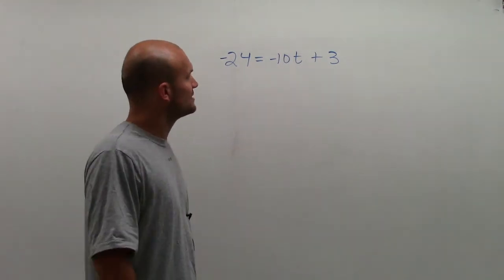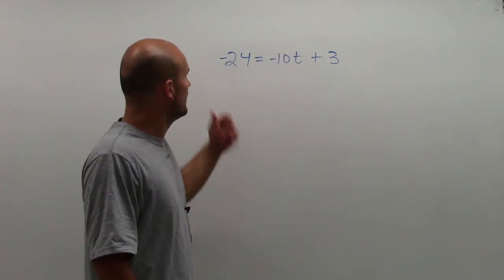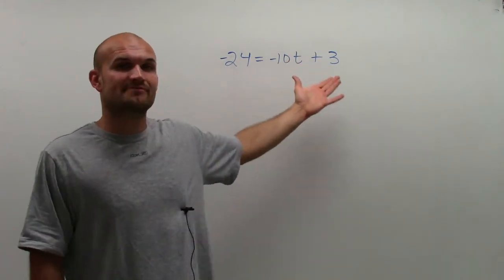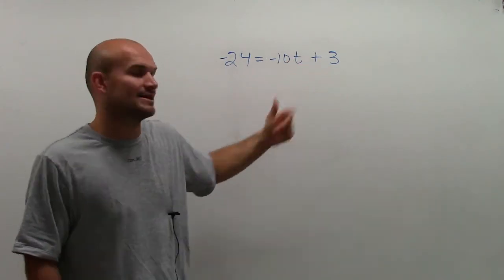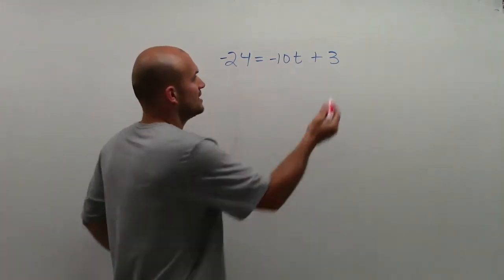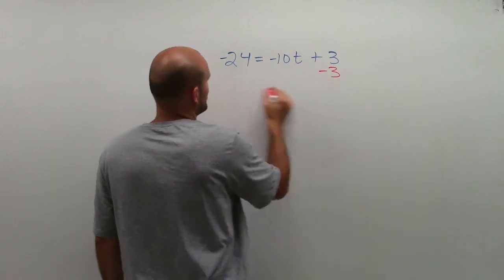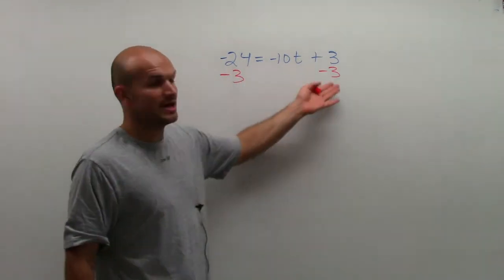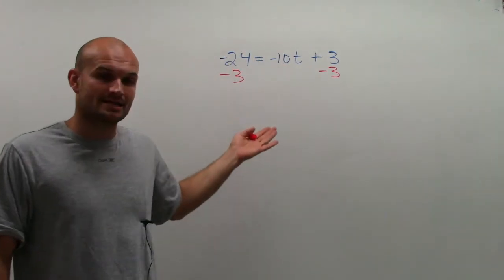So here, what I'm going to have is I have a positive 3. I'm adding a 3 to my t. Remember, we need to isolate this variable t. We need to get this variable by itself. To undo that, just follow your operations. Undo addition and subtraction. Since I'm adding, I'm going to subtract a 3. And I need to make sure I do that on both sides. So I subtract it on the right side. I need to make sure I subtract on the left side.